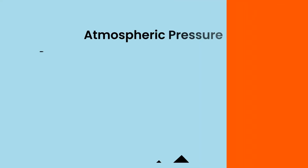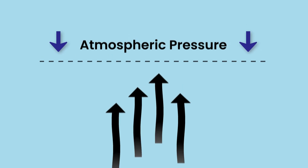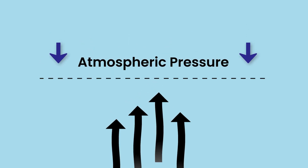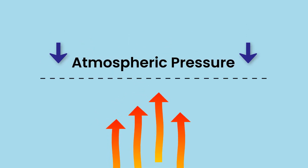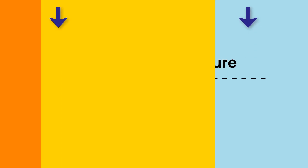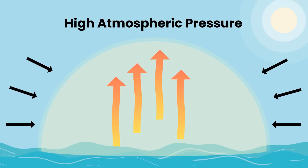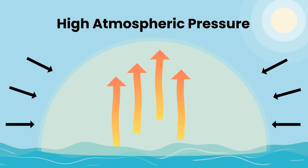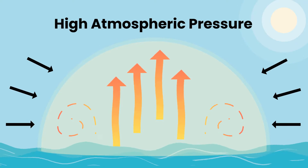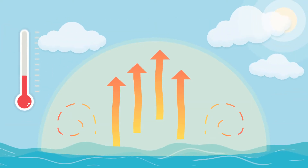Similarly, when the atmospheric air is pushed down by the atmospheric pressure, the air gets warmed up. The high atmospheric pressure prevents the hot air from escaping, and so it starts circulating inside the dome, making it much hotter than usual.